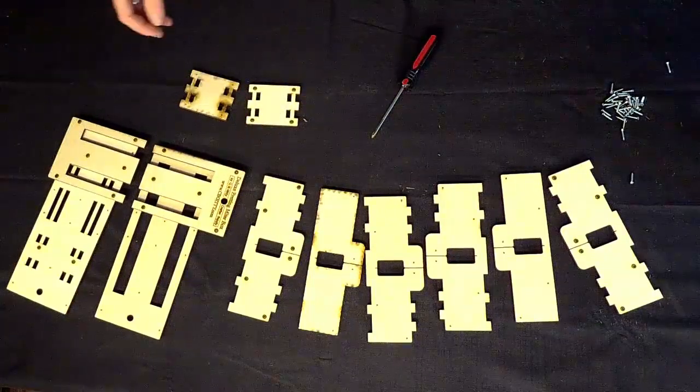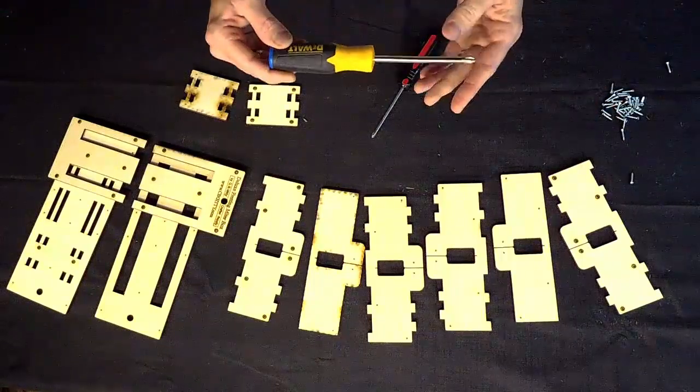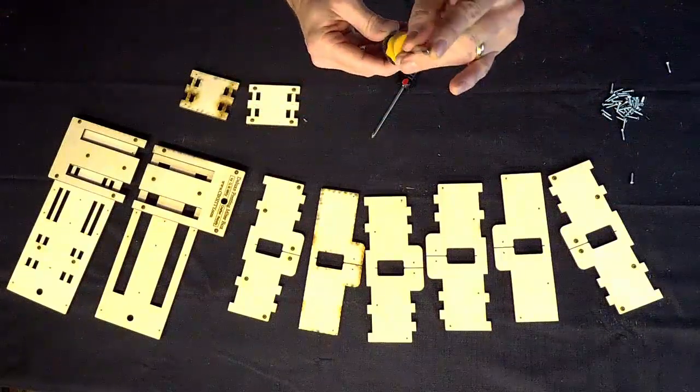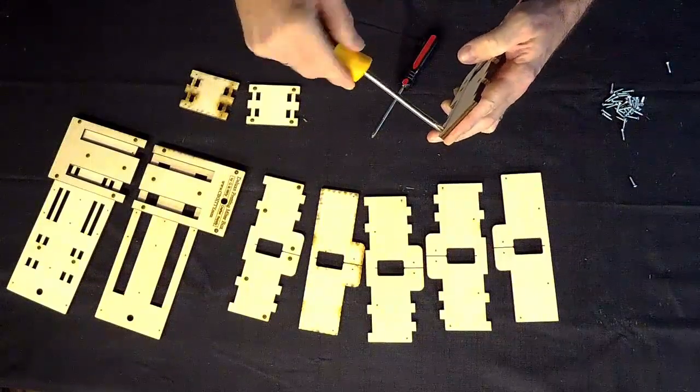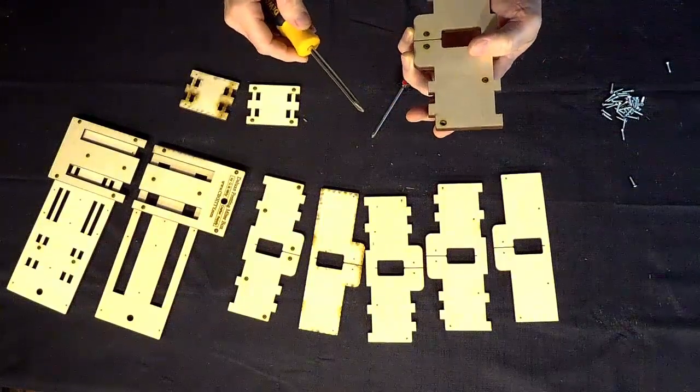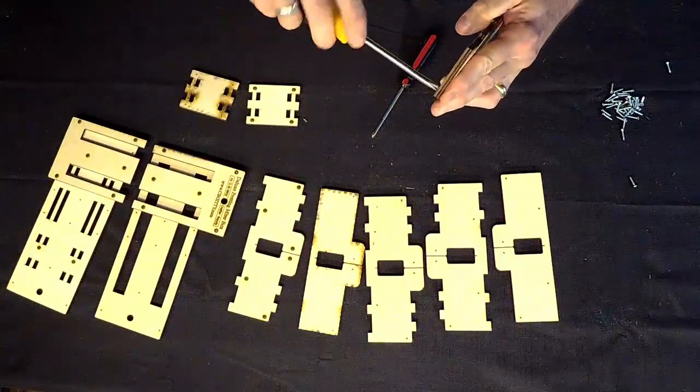Also if you are using a hand screwdriver, you can take a larger head Phillips screwdriver and use it to bore out the countersinking rings on each of the screw holes to help the screw head get seated into place.